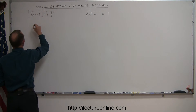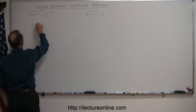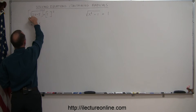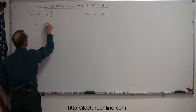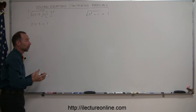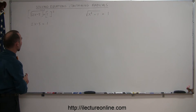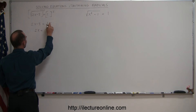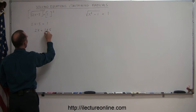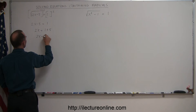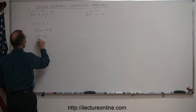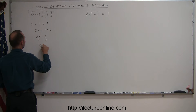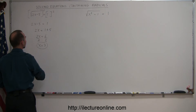If we square the left side, we end up with 2x minus 5, because the square cancels out the radical. On the right side, 1 squared is simply 1, and then this becomes a linear equation, which is very easily solved. We'll move the minus 5 to the other side. When we do that, the negative sign changes to a positive sign, and we end up with 2x is equal to 6. Divide both sides by the coefficient in front of x, which is 2, and so we get x equals 3, and that appears to be the solution.